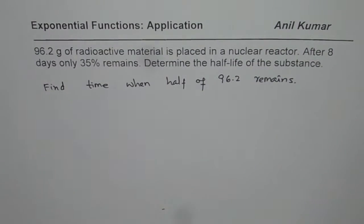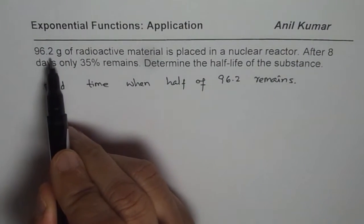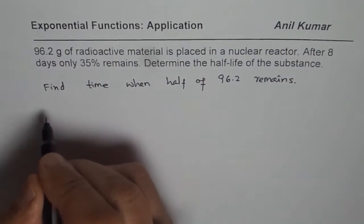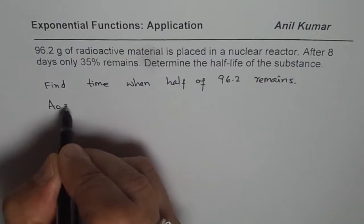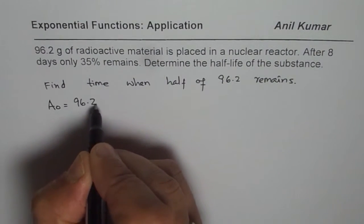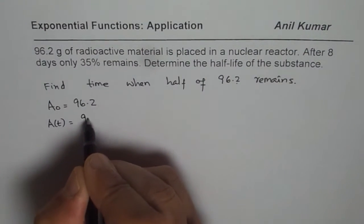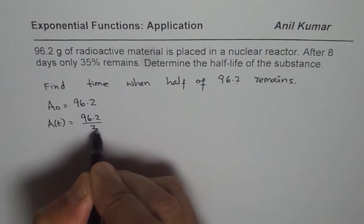Now it says, 96.2 grams of radioactive material is placed in a nuclear reactor. So the initial amount, A0, is 96.2. Final amount which we want at time t is half of 96.2.